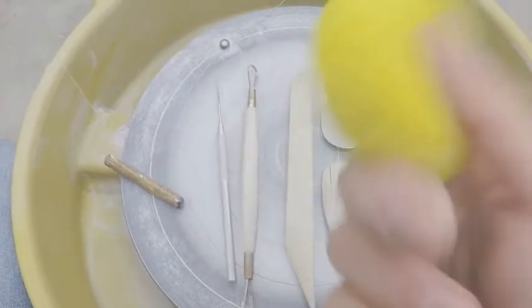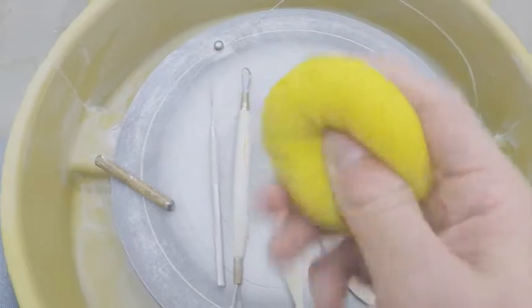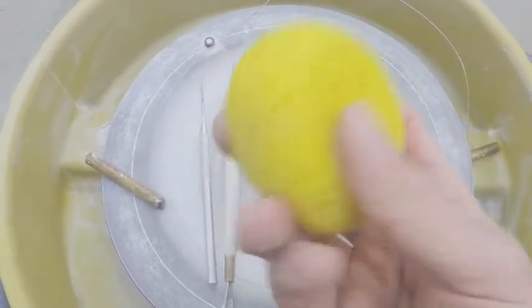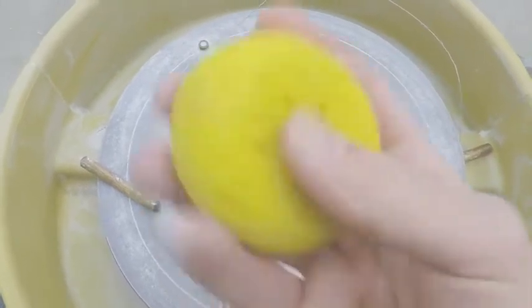So first of all, the sponge is going to be your best friend. The sponge is crucial. I cannot say how important a sponge is in throwing. It's the second most important thing to water itself. And the reason why it's so important is it helps you control your water, get it on the piece, get it off the piece,